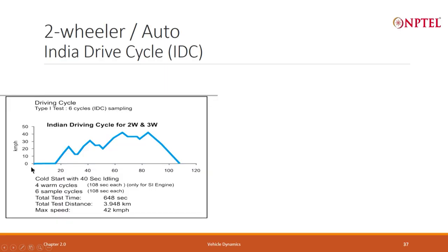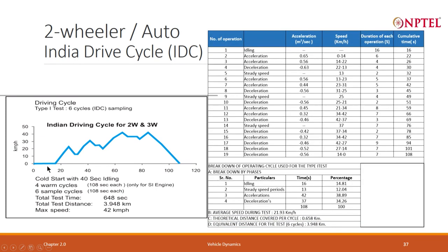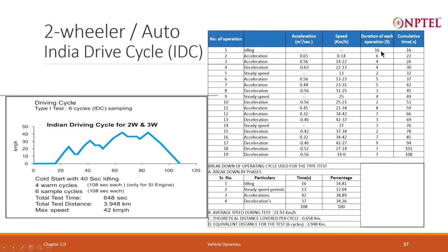We are going to talk mostly about electric vehicles. We will assume the first 18 seconds is zero speed. If you see the drive cycle, the first 16 seconds is idling. Then from 16 to 22 seconds — 6 seconds — you are accelerating, with an acceleration of 0.65 m/s².